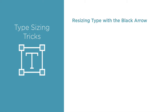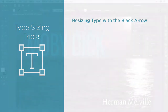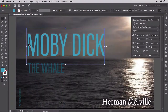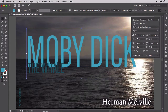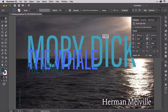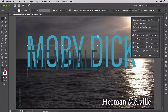The most visual and intuitive way to get text to the right size, particularly if the right size is to fit an existing space, is to resize the point type object with the black arrow selection tool. With that tool selected, highlight the point type object and drag one of the bounding box's control corners to resize the object and text. Hold the shift key while you do that to resize proportionally.